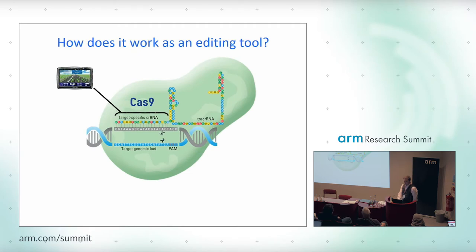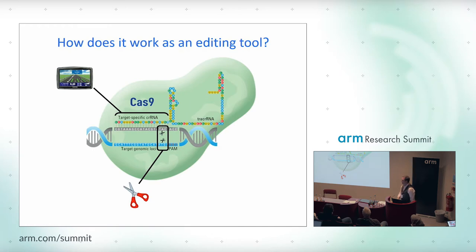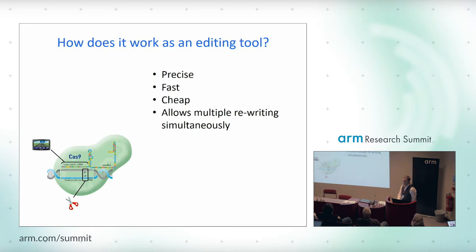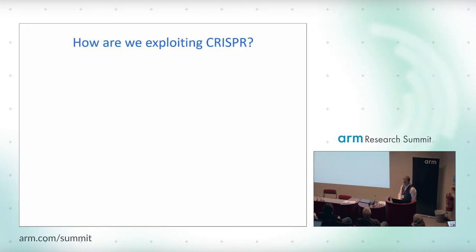I'm not expecting you to understand all the science here, but to give a more scientific view: the DNA across here includes a sat-nav component — the variable bit — which is completely programmable to any part of the genome, and the big blob around here is the enzyme, which is the scissors. What's unique about this technology is the sat-nav is cheap and easy to make and recode. All in all, this makes the system precise, fast, cheap, and allows lots of rewriting simultaneously — it's incredibly customisable.